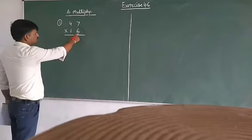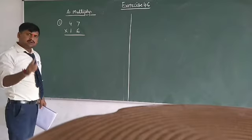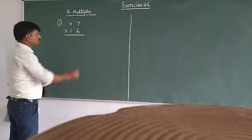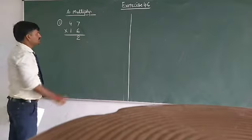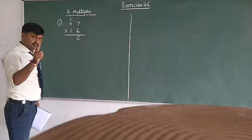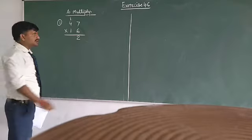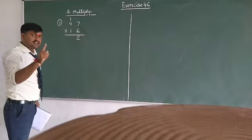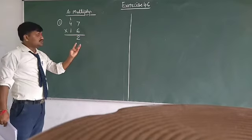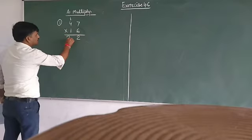We will learn how to multiply. 6 × 7 = 42. Write 2 down in the 1s place and carry 4. Then 6 × 4 = 24, and plus 4 carry equals 28. So write 28 in this space. The total number is 282. So 47 × 6 = 282.